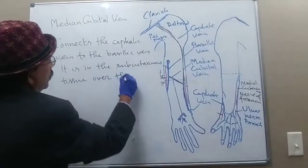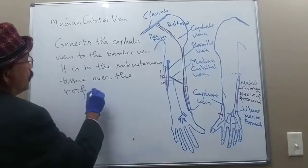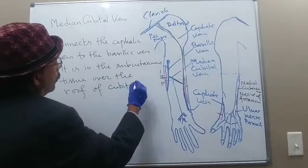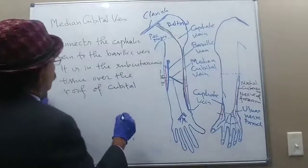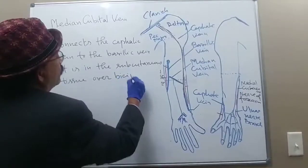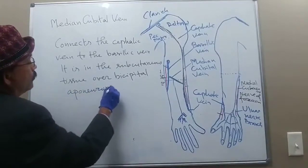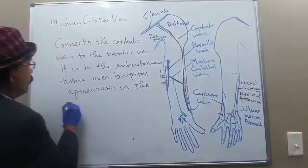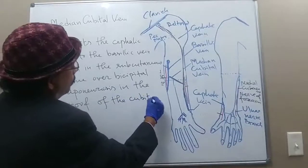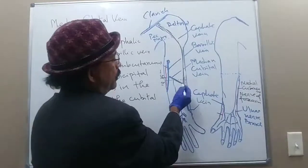It is located in the subcutaneous tissue over the roof of the cubital fossa — specifically over the bicipital aponeurosis, which forms the roof of the cubital fossa.